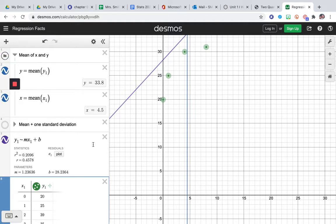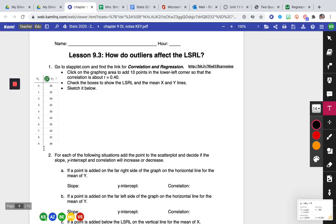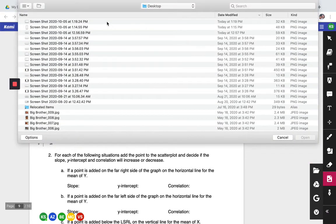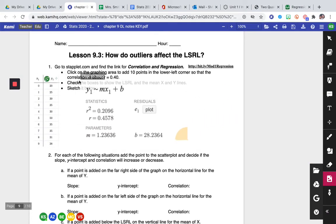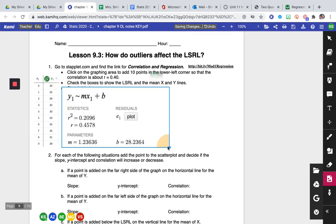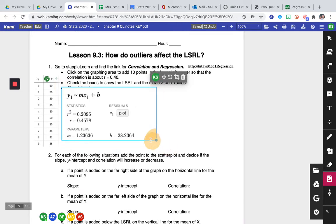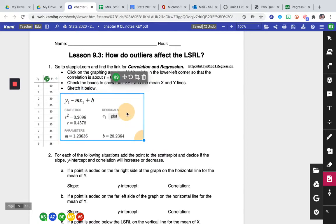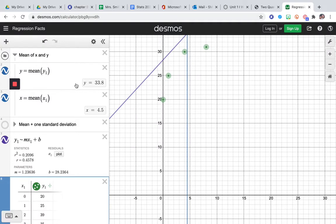All right, I'm going to screenshot my data right here and then let's drop that into the Kami. I'm going to insert image. Don't judge my computer screen, guys. So there we go. That's our least squares regression line, our correlation coefficient. And I'm going to screenshot the mean of the x and y so that we can continue to analyze the rest of this data.